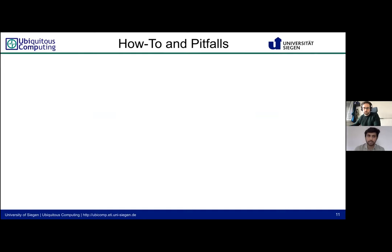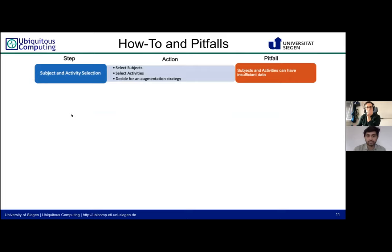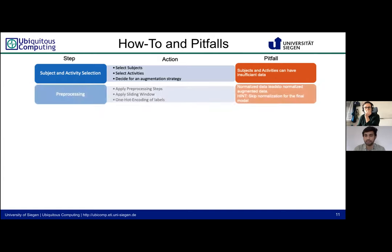Now we discuss the step-by-step guide, the actions needed at every step, and possible pitfalls. Step one: select the activities and subjects for augmentation and decide on a suitable augmentation strategy. A major pitfall here is choosing an activity or subject that is not reliable for data augmentation due to an insufficient number of samples or insufficient data quality. Step two: apply preprocessing and windowing together with one-hot encoding of the labels. If augmenting fold-wise, make sure to create the necessary folds at this step.